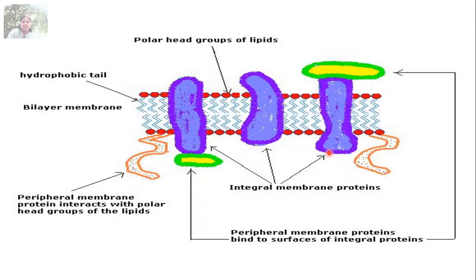This picture shows integral membrane proteins and peripheral membrane proteins which bind to the surface of the membrane. It is a hydrophobic bilayer where membrane proteins and peripheral membrane proteins interact with the polar head groups of the lipids.